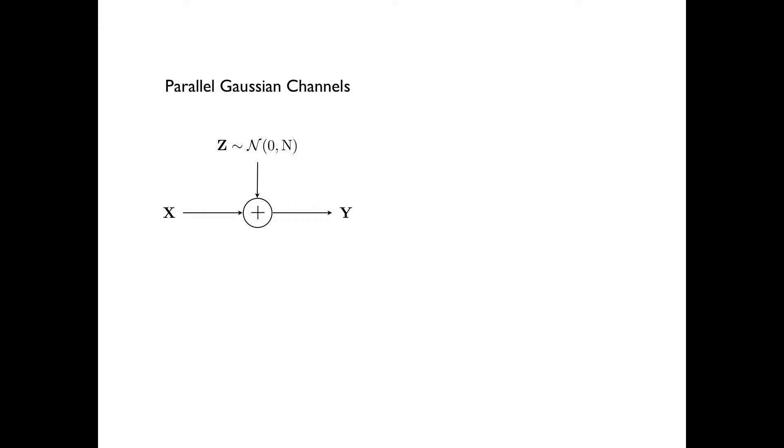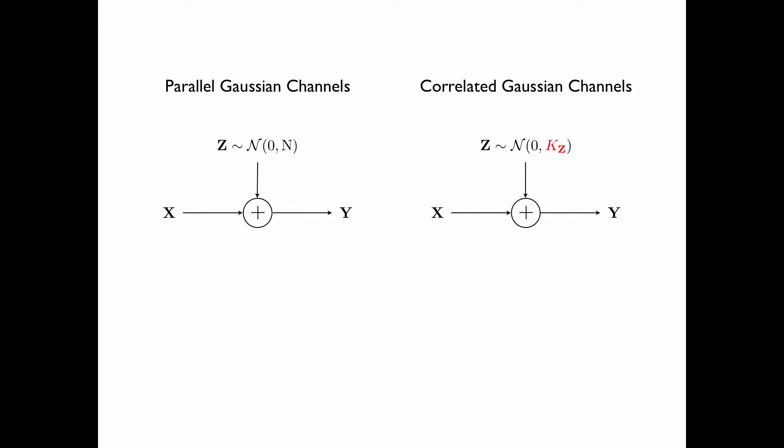With this representation of parallel Gaussian channels, we can generalize it to correlated Gaussian channels, where the covariance matrix of the noise vector z, Kz, is not necessarily a diagonal matrix. For correlated Gaussian channels, we also impose a constraint on the input power. Our task is to determine the capacity of a system of correlated Gaussian channels.